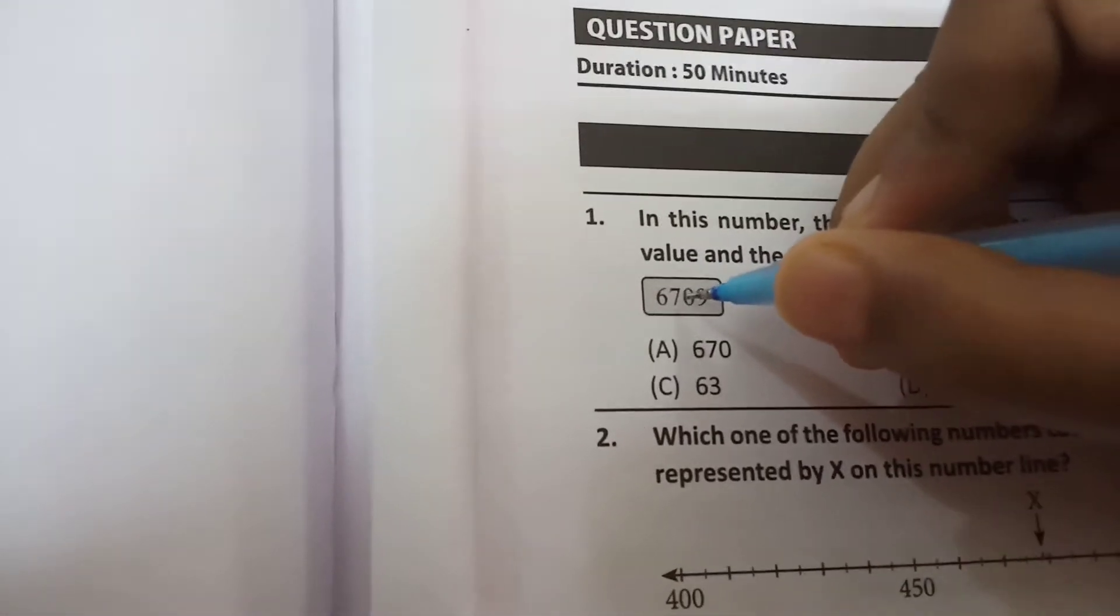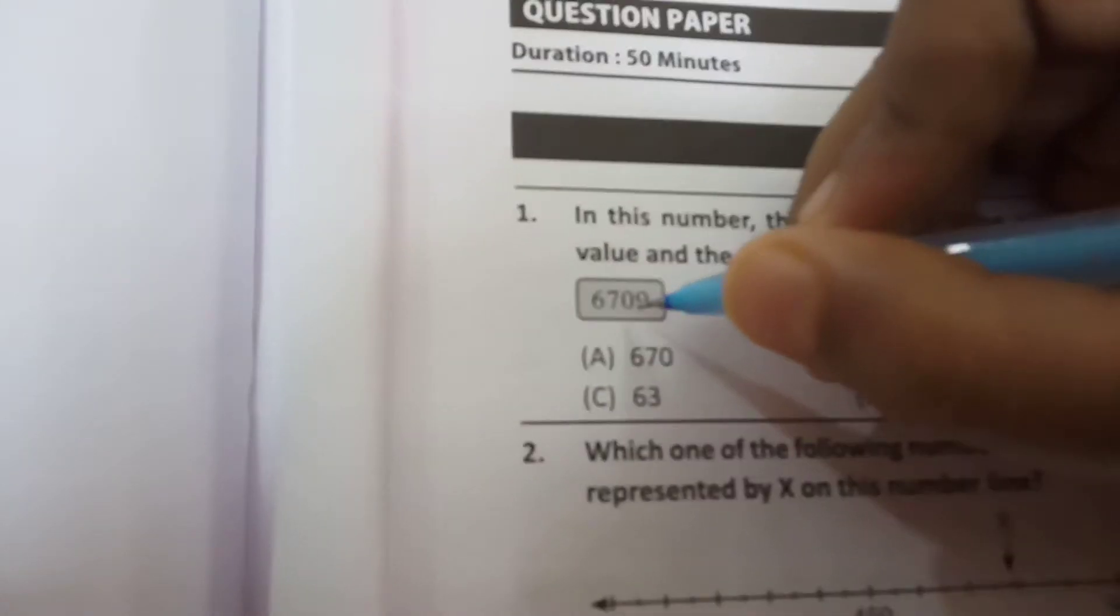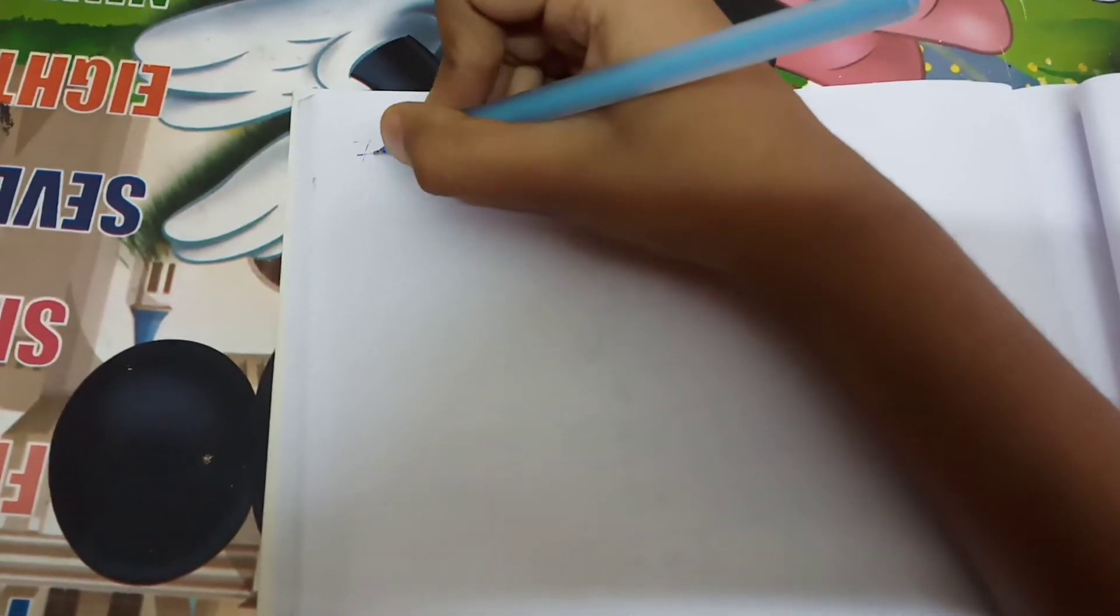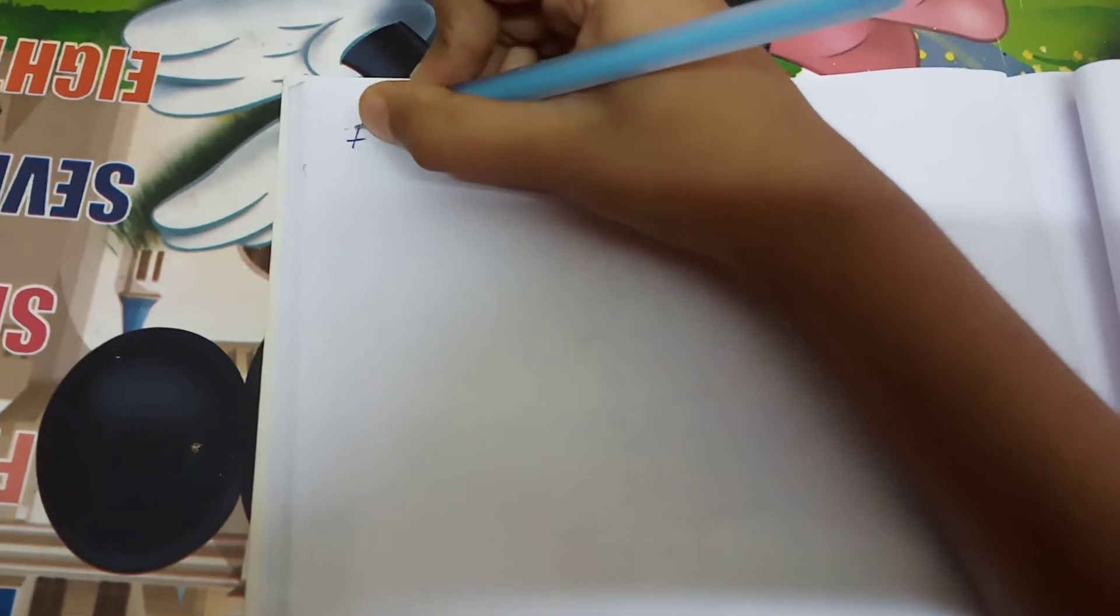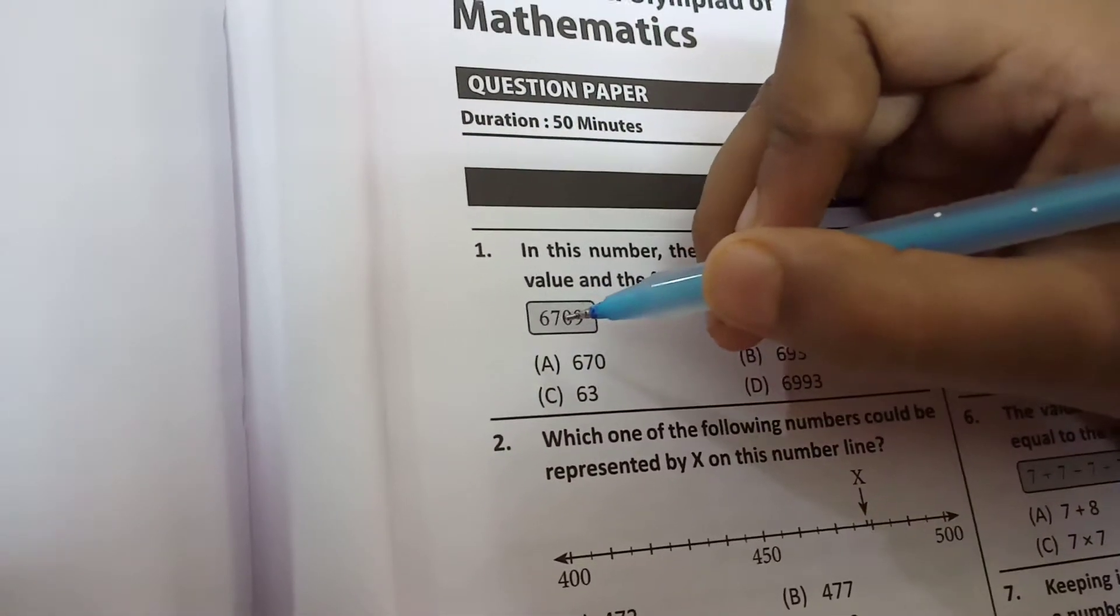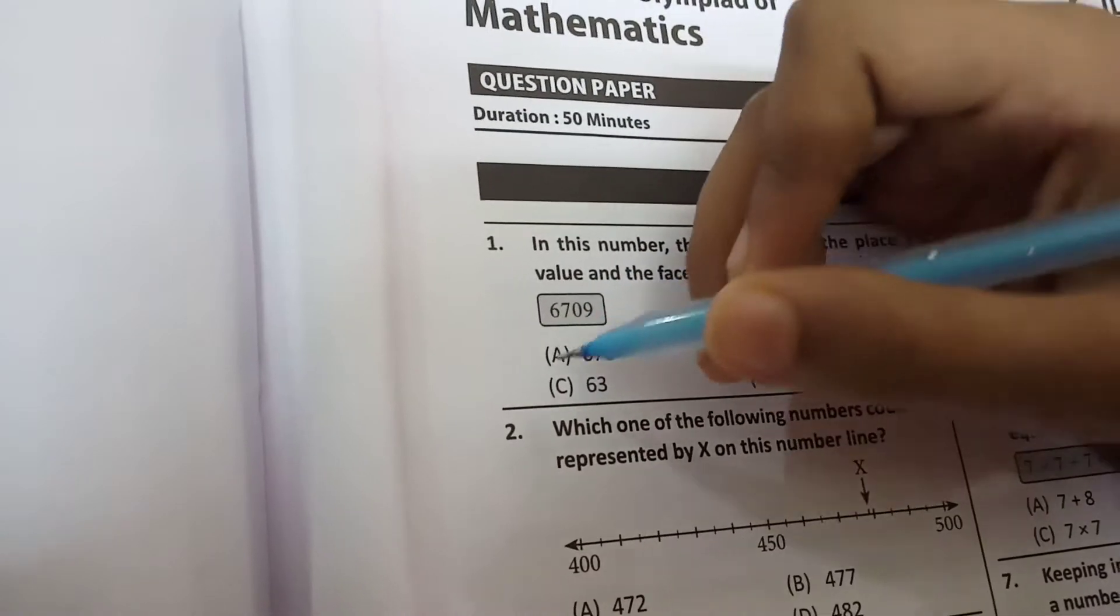7 is in the 100th place, so it will be 700. Let's write 700. Now we need to find the face value of 7. Always the face value of any number is the number itself. So 7.